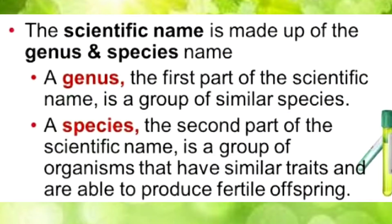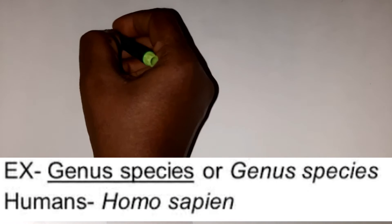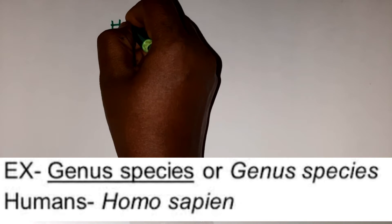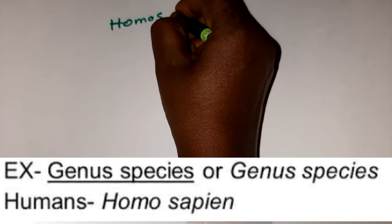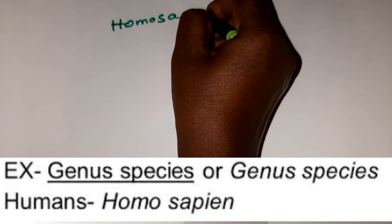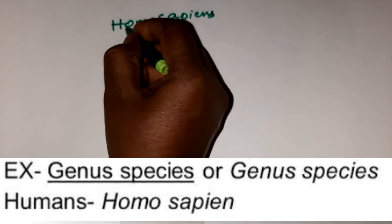The first rule: every organism should possess a scientific name and it should contain two names. The first name is the genus and the second name is the species. For example, Homo sapiens is the scientific name of man — Homo is the genus and sapiens is the species.